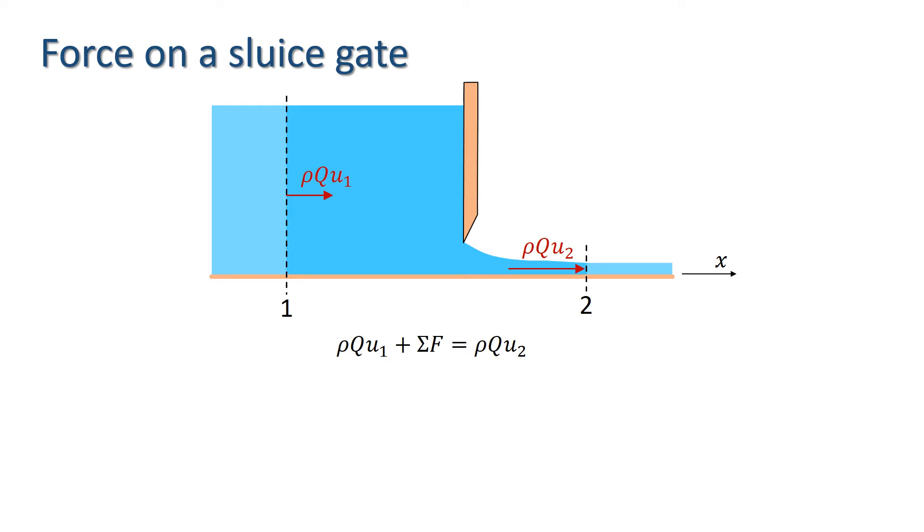So, we have the momentum entering and leaving rho q u1 and rho q u2, but what are the forces acting on the water? Well, there's a pressure force at cross-section 1, which is the force due to the pressure of the water upstream of the control volume, which I've denoted F1.